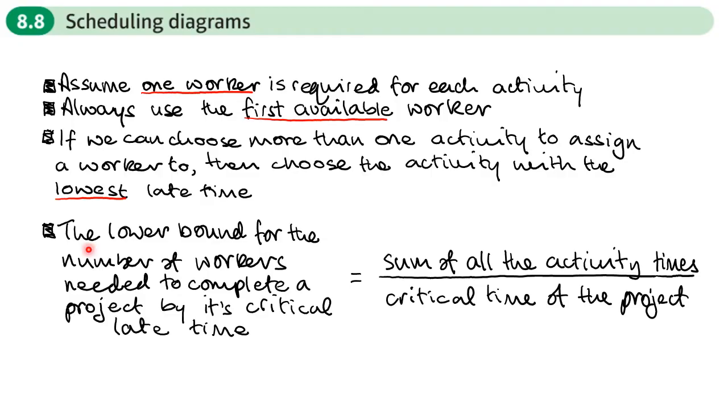Now we can't say for definite what's the minimum number of workers needed to complete a project, but we can work out a lower bound. We can work out the minimum number of workers that the value should be. And if we get that lower bound, we know we've found the minimum number of workers.